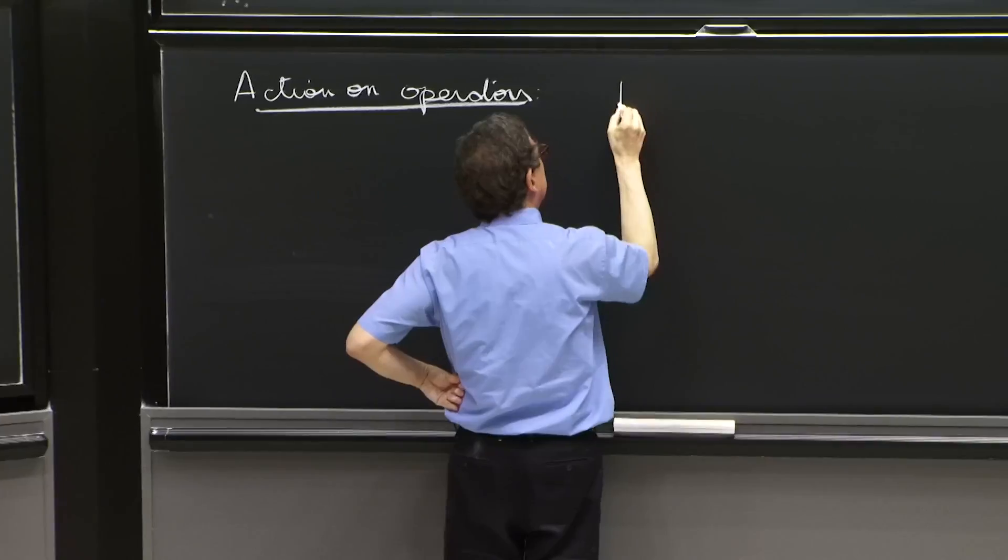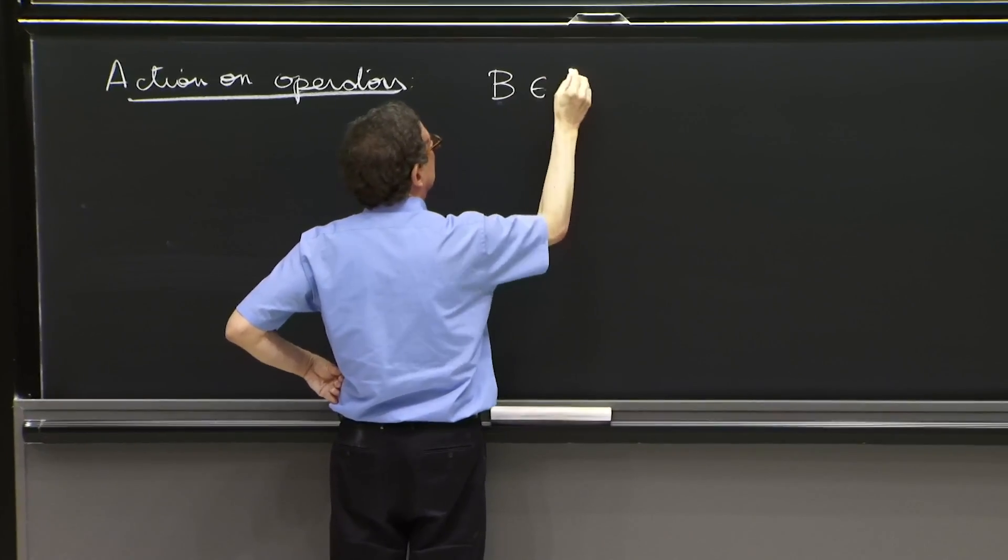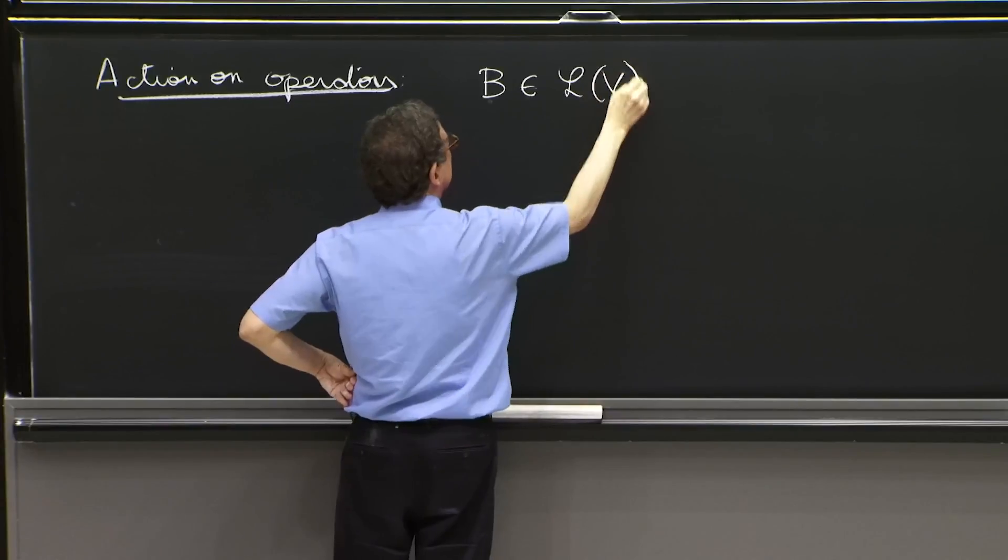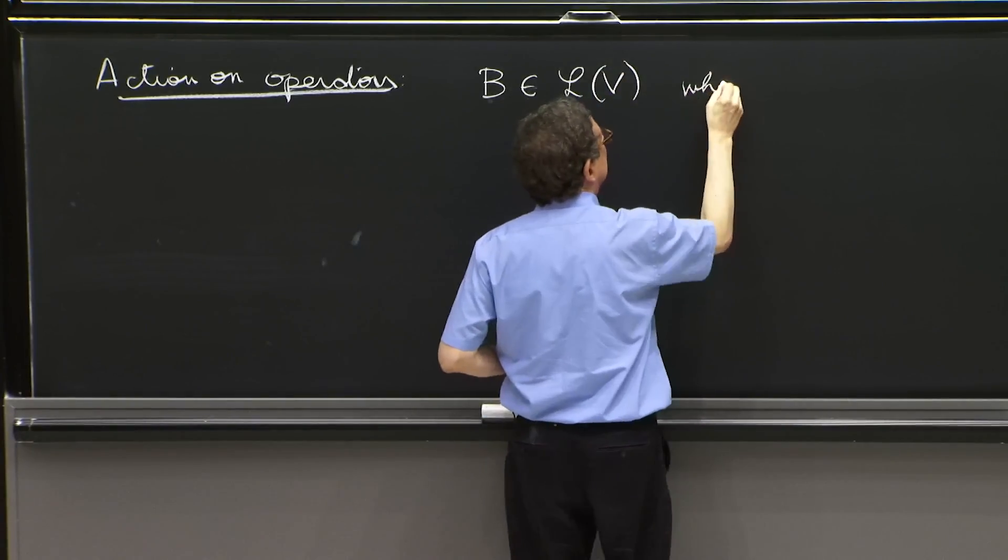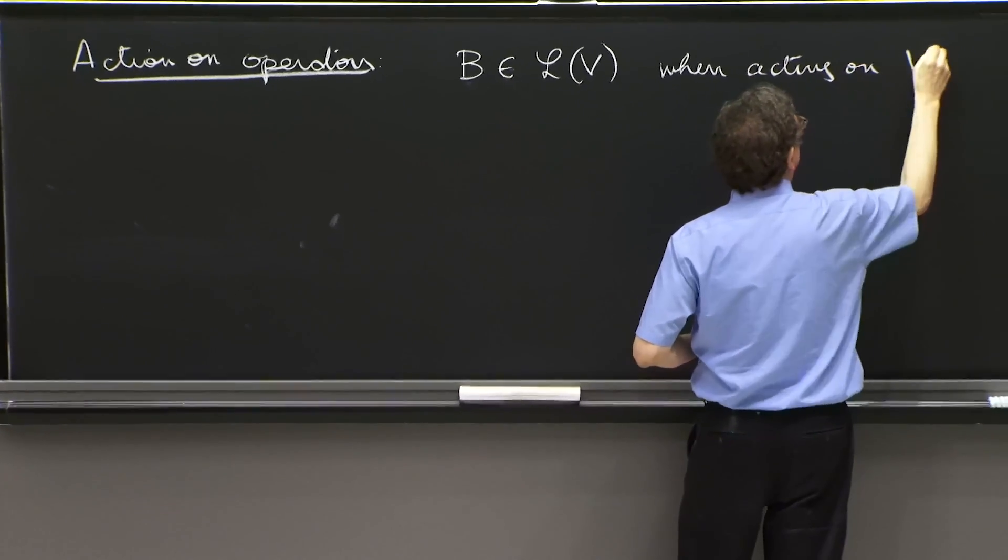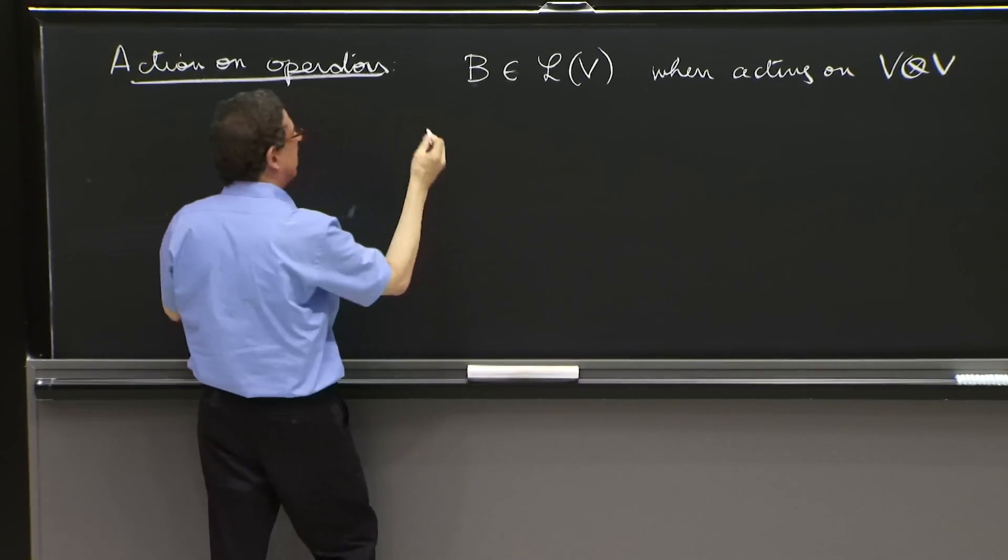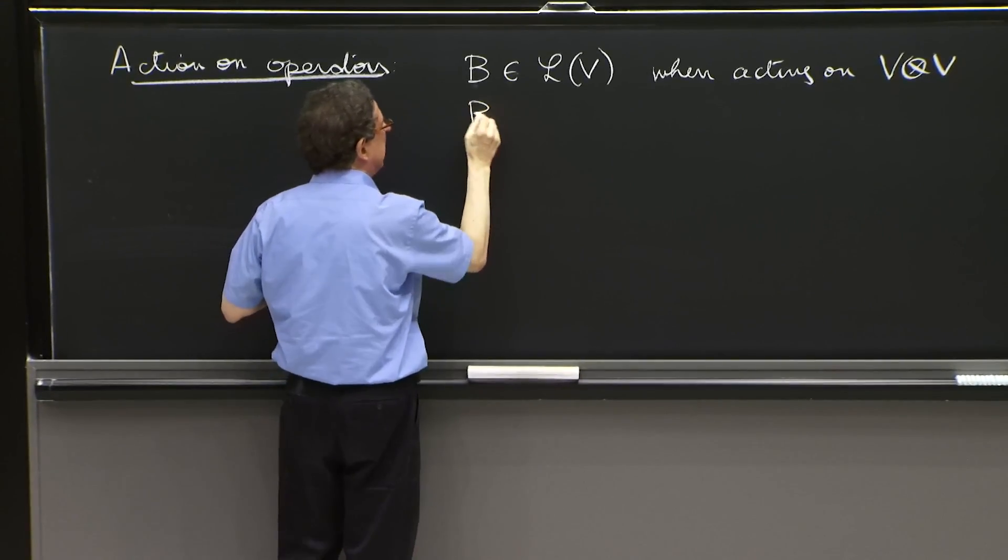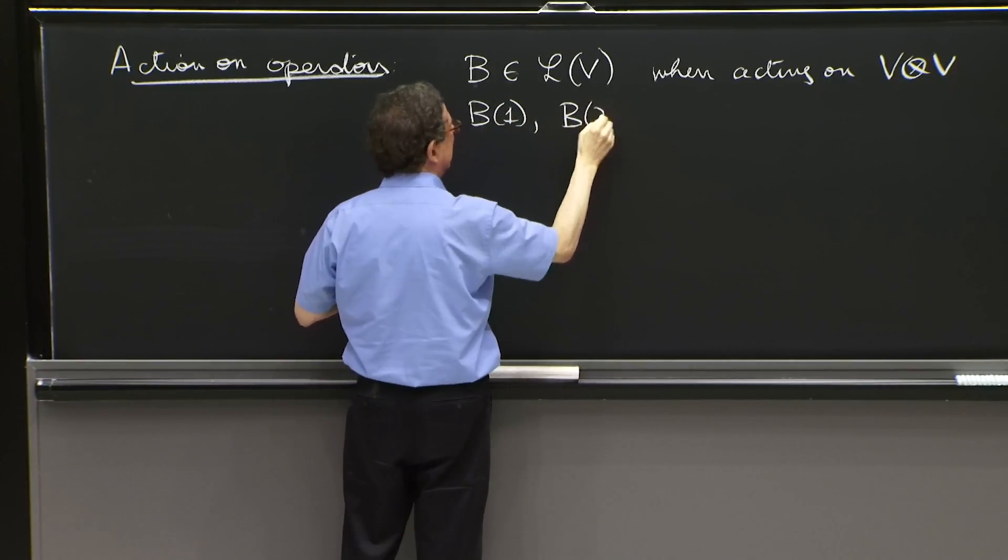So for example, an operator B that belongs to the linear operators on V, when acting on V tensor V, we define two operators, B1 and B2.